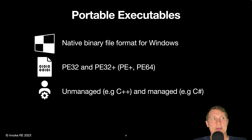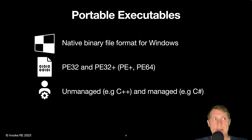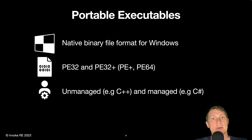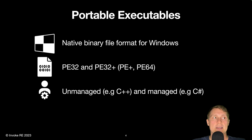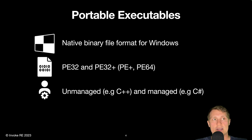The native binary format used in Microsoft Windows is called the Portable Executable Format, or PE format, and this is the binary format we will be analyzing in this course. The base format is referred to as PE32, which makes use of 32-bit addressing, and this was later extended to PE32+, which is used to support 64-bit addressing and 64-bit CPU architectures. The PE format can be used to both execute unmanaged code and managed code. Unmanaged code contains raw x86 and x86-64 instructions executed at runtime, while managed code is interpreted at runtime by a given framework, such as the .NET framework.